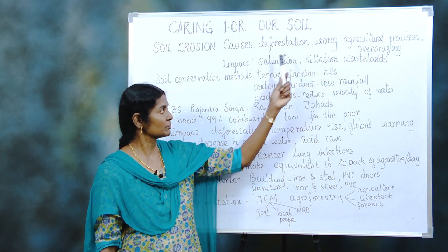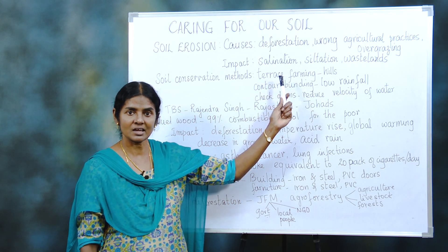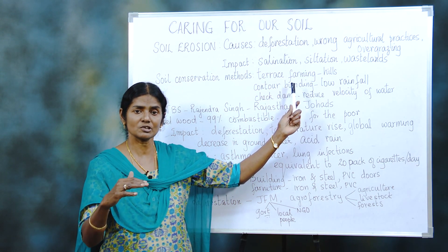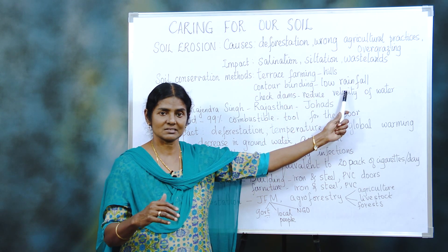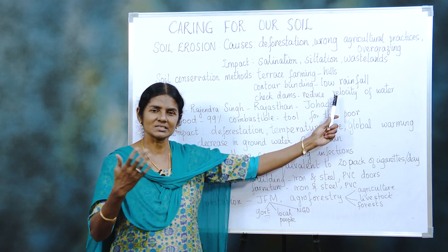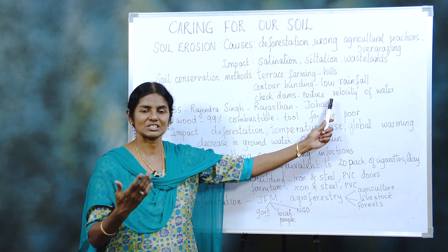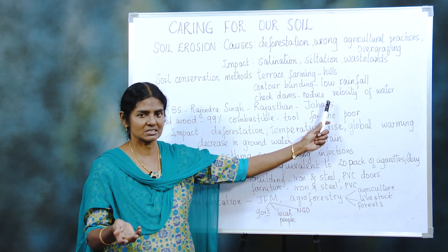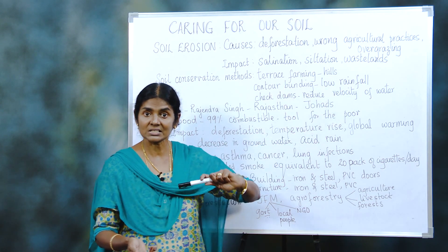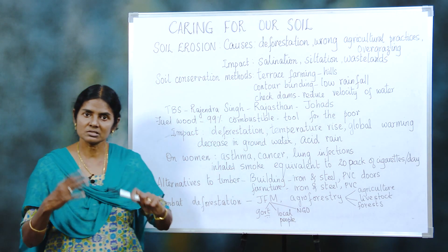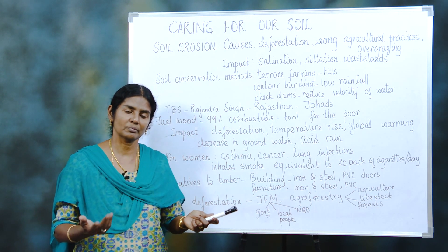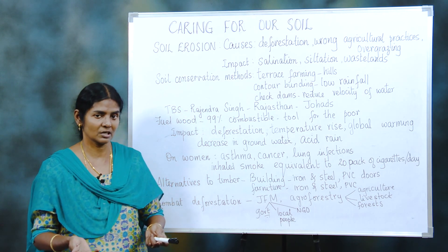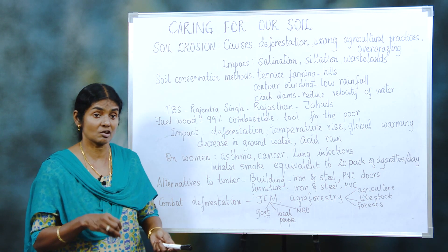When all these things happen, you have salination — where all the mineral salts are deposited on the top layer of the soil. Then there is siltation, where all the soil is washed away — the top layer is eroded and sediments in a different place. And because of all these wrong agricultural practices, cultivable land becomes wasteland because it loses its soil fertility.